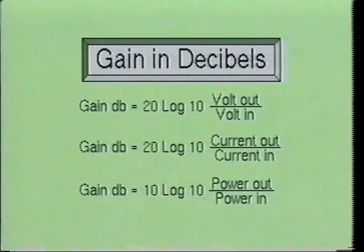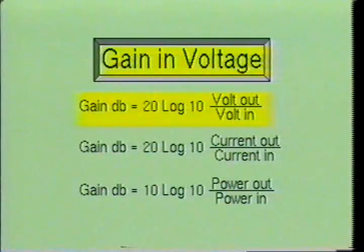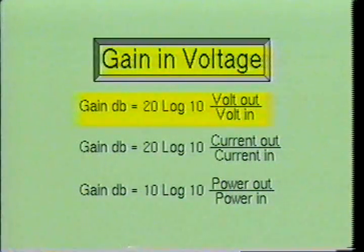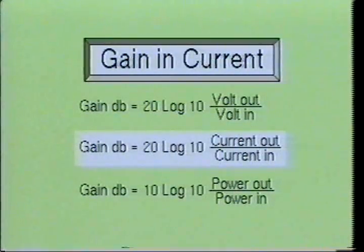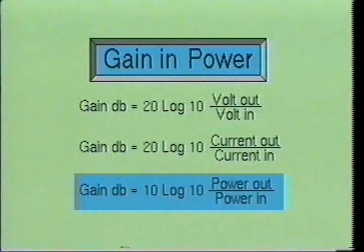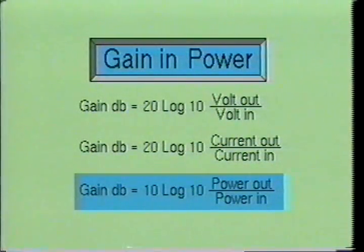When gain is expressed in decibels, the equations require the use of logarithms to the base 10. For voltage, the equation is: gain in decibels equals 20 log10 times voltage out divided by voltage in. For current, the equation is: gain in decibels equals 20 log10 times current out divided by current in. And for power, the equation is: gain in decibels equals 10 log10 times power out divided by power in.